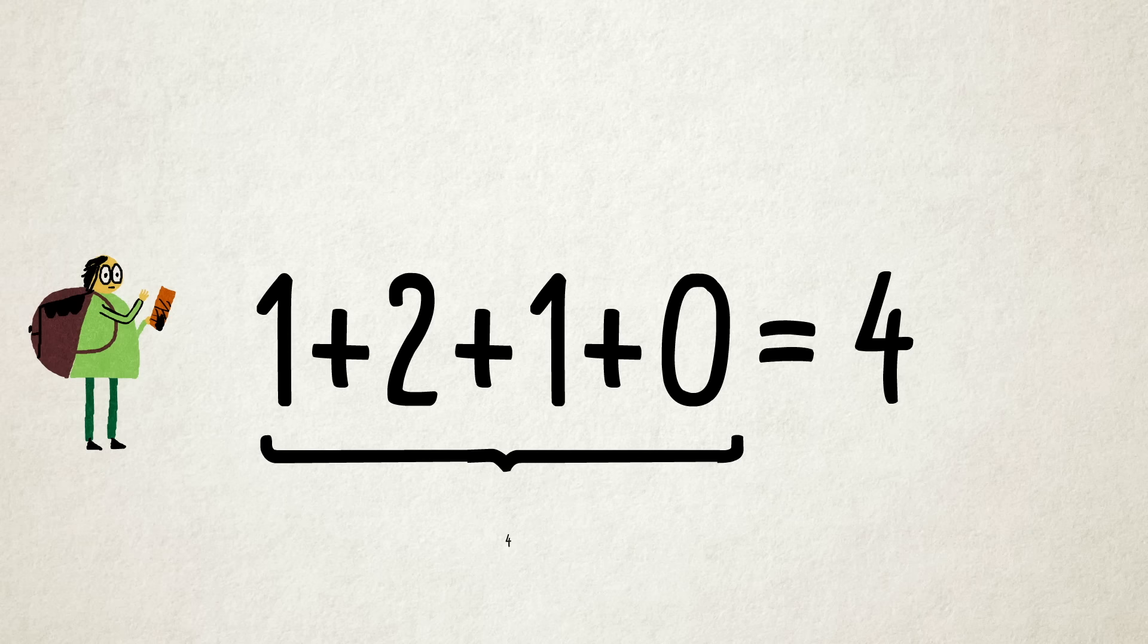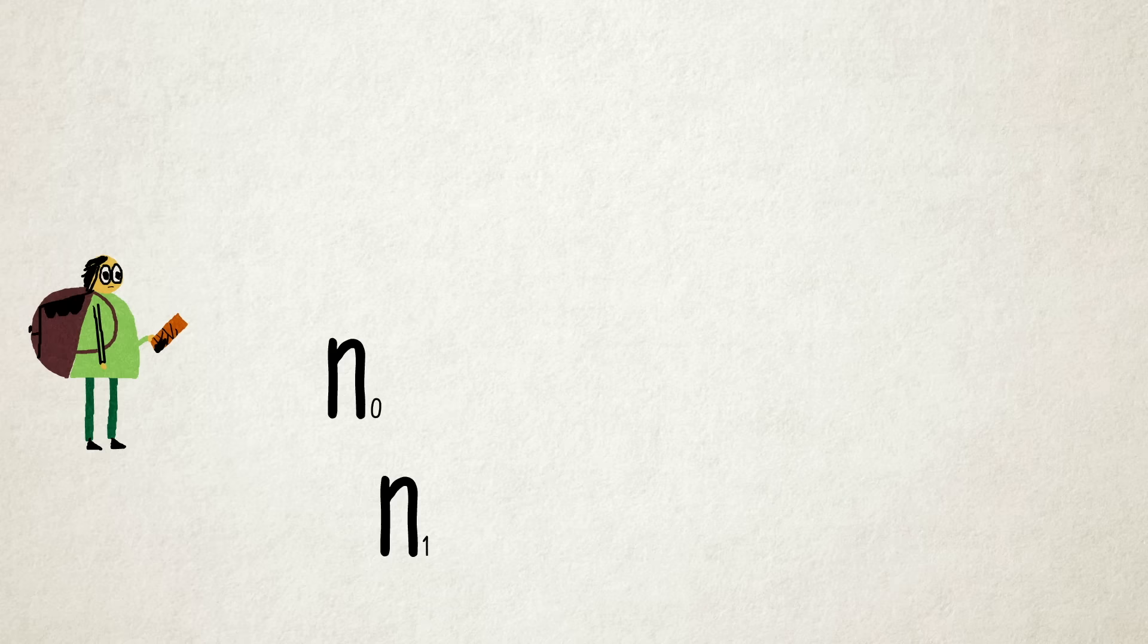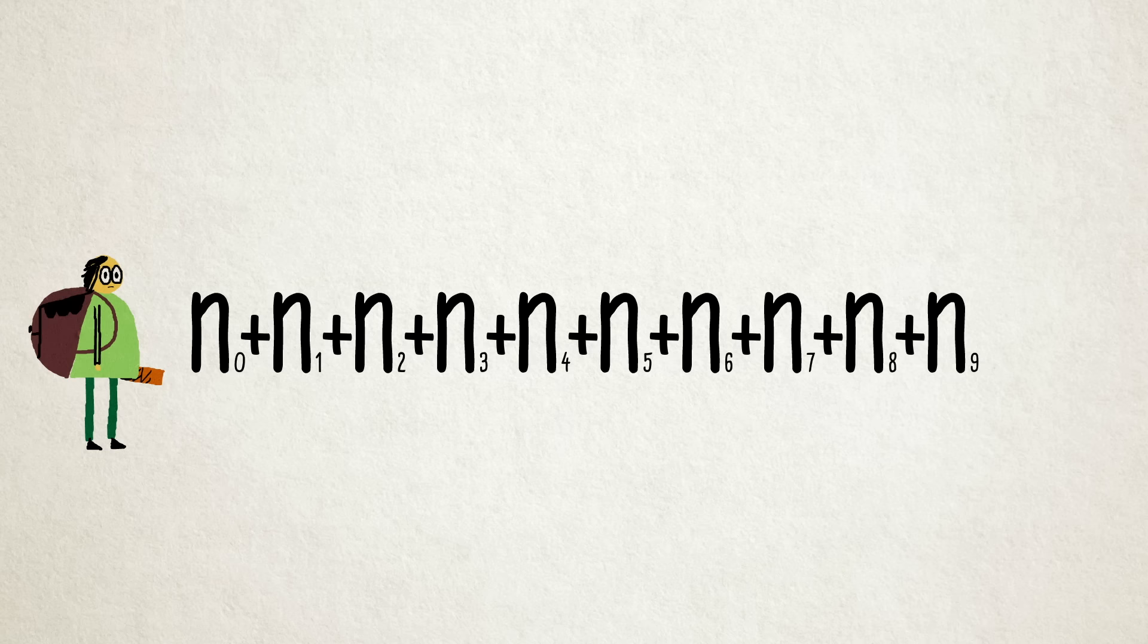By adding all the digits in 1210 together, we get 4, the total number of digits. This makes sense since each individual digit tells us the number of times a specific digit occurs within the total, so the digits in our 10-digit autobiographical number must add up to 10.